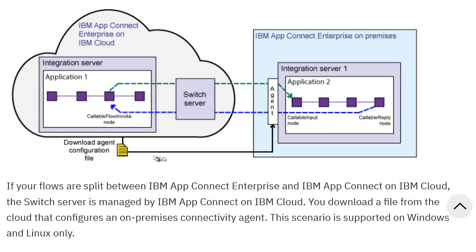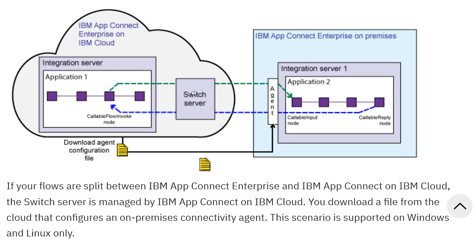Jumping back to my diagram to illustrate what I've done: I've taken the agent configuration file and downloaded it onto my workstation, where it's waiting to be used. I've also signed on to IBM AppConnect Enterprise on Cloud and the switch server is there, with nothing ready apart from the list of callable flows. Now I'll show you the integration flow running in Cloud Pak for Integration — which doesn't have to be on-premises — and illustrate how to deploy this flow and attach the relevant agent file to it.